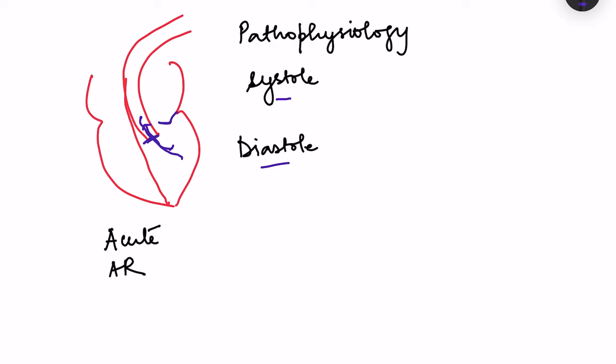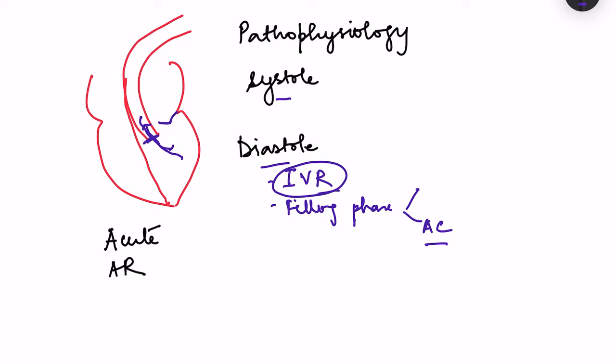In the cardiac cycle, diastole has three phases: isovolumetric relaxation, fast filling phase, and filling due to atrial contraction. Isovolumetric relaxation means both mitral and aortic valves are closed while the left ventricle relaxes without volume change. However, in aortic regurgitation the aortic valve is not closing, so blood flows into the left ventricle during that phase too — meaning there is no IVR phase in aortic regurgitation.